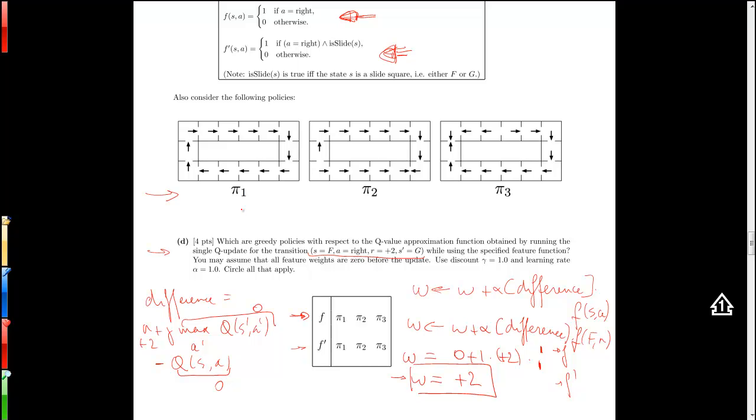Let's look at pi 1. Here we sometimes move left, sometimes even when the right action is available we sometimes move left, so no to pi 1. For pi 2, whenever the right action is available we move right. That's good. For pi 3, sometimes we move left when the right action is available, so no good.